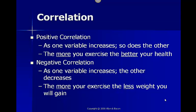We can have either a positive or a negative correlation. With a positive correlation, as one variable increases, so does the other. For example, the more you exercise, the better your health. With a negative correlation, as one variable increases, the other decreases. For example, the more you exercise, the less weight you gain.